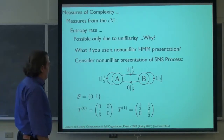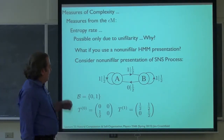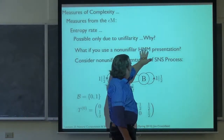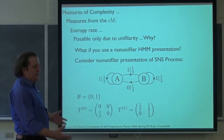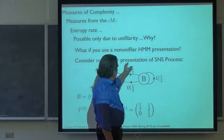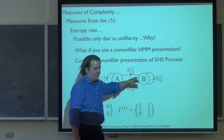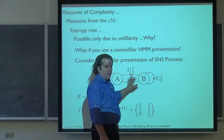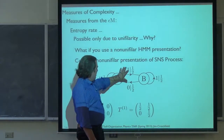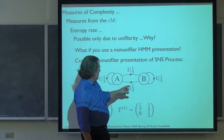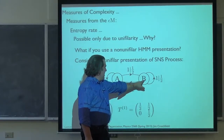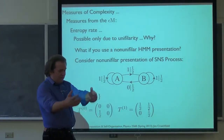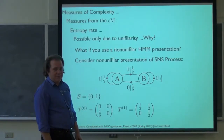I want to expand on why we need unifilarity, and a nice way to do that is to take one of our workhorse examples — the simple non-unifilar source — as another presentation of a process. Imagine a process generated by this mechanism: two internal states that branch to each other with fair probabilities, so the internal state sequence is a fair coin over A and B. What we see is given by the 0/1 symbol labels. If I'm in state B, I see a zero with probability half and go to A.